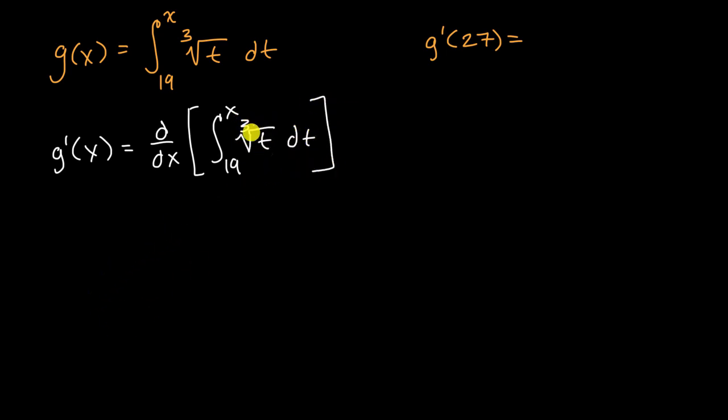And you might be tempted to take the antiderivative here and evaluate it at x, evaluate it at 19, find the difference, and then take the derivative, and you could do that and then evaluate it at 27. But we're going to see a shortcut.